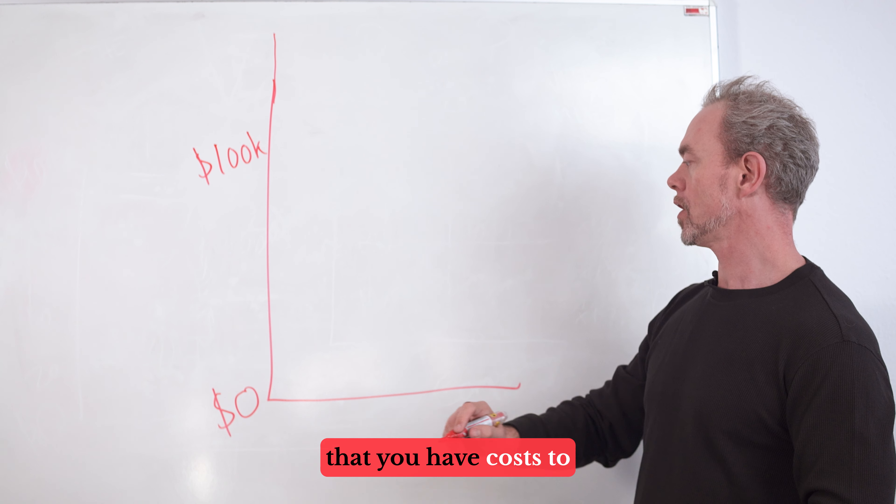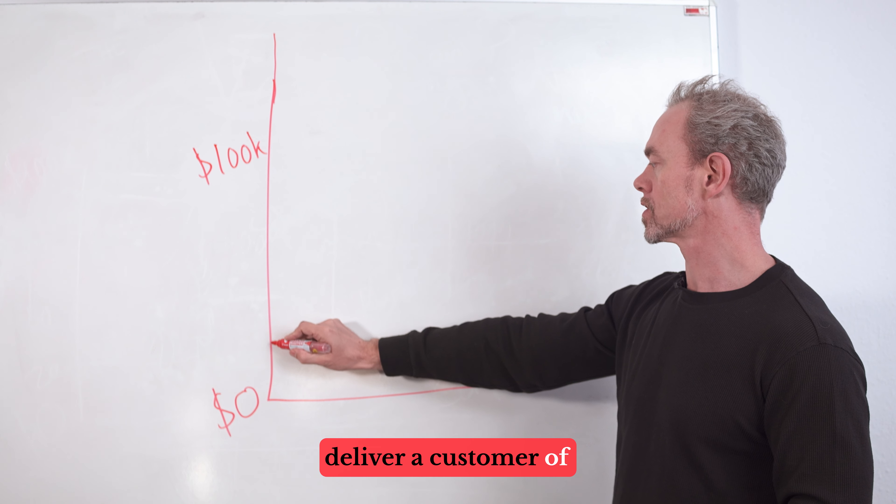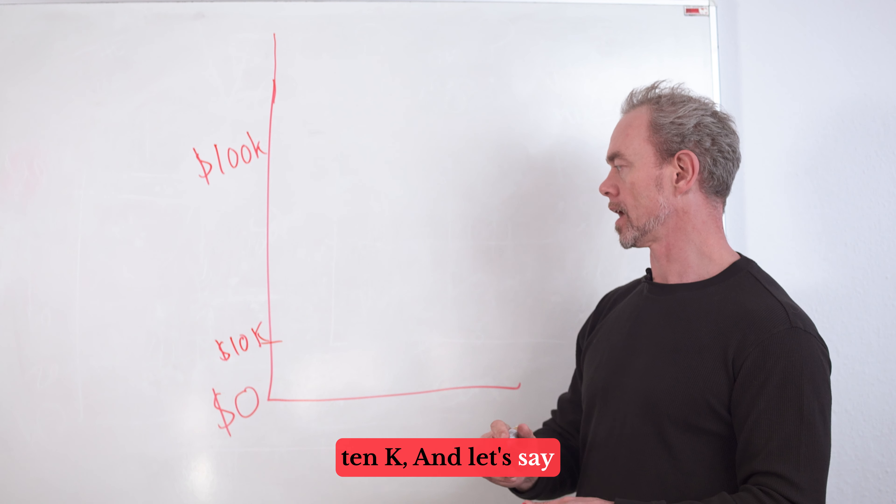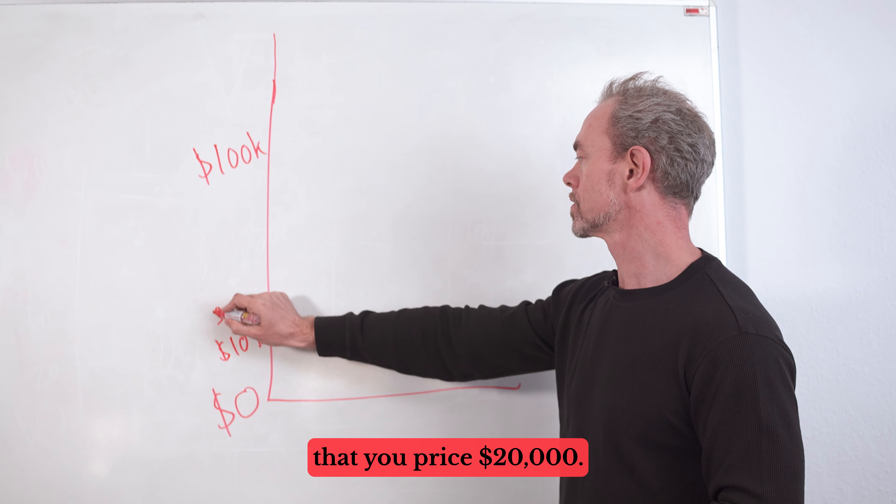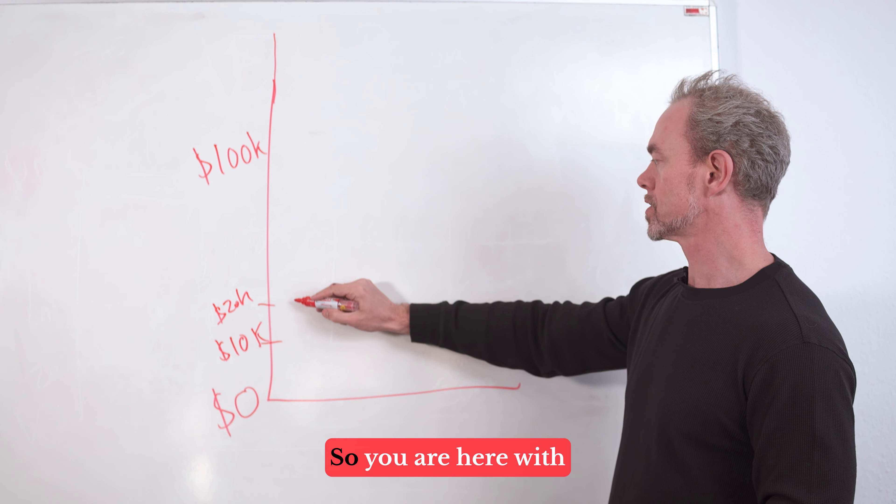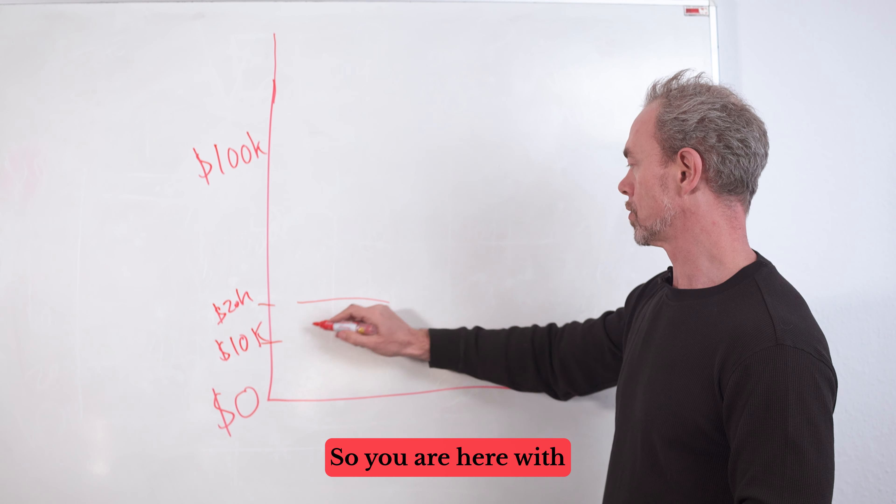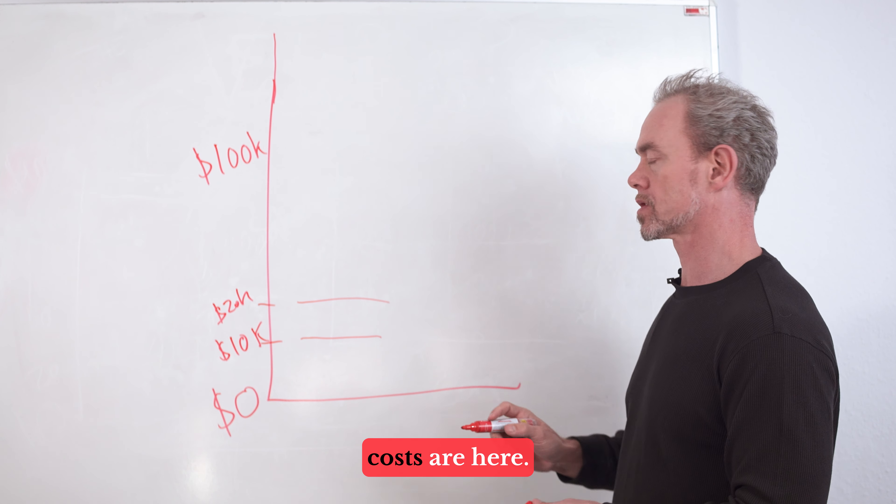Let's say that you have costs to deliver a customer of $10k. And let's say that you price $20,000. Now you have a 50% margin. So you're here with the price and then your costs are here.